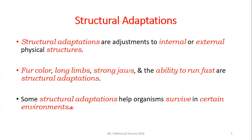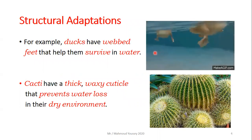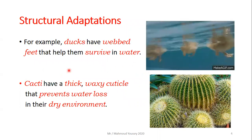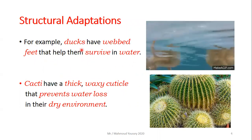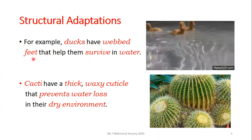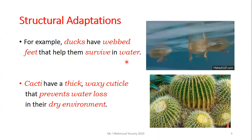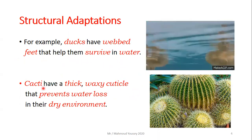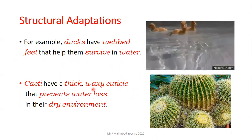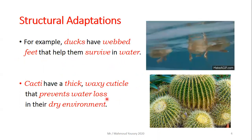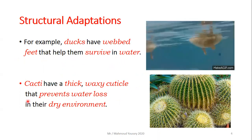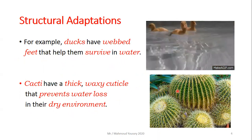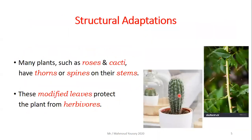Some structural adaptations help organisms survive in certain environments. For example, ducks have webbed feet that help them survive in water. Also the cacti have a thick waxy cuticle that prevents water loss in their dry environment, because they live in the desert.